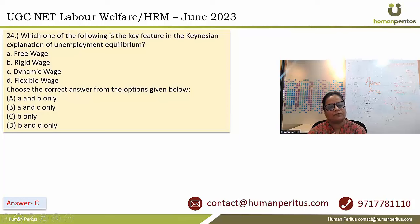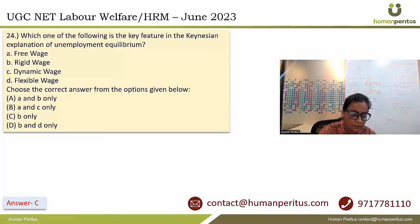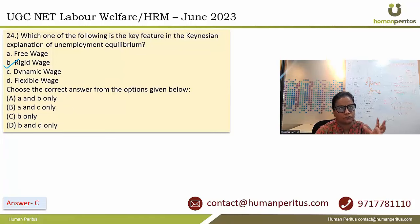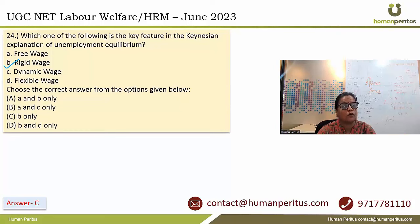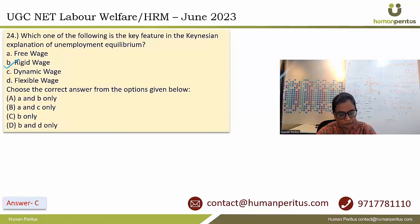Which is the key feature in the Keynesian explanation of unemployment equilibrium? In the Keynesian explanation, he talks about rigidity of wages. In the short term, wages are not flexible and not responsive to changes in economic conditions. So the answer is B — rigid wages.